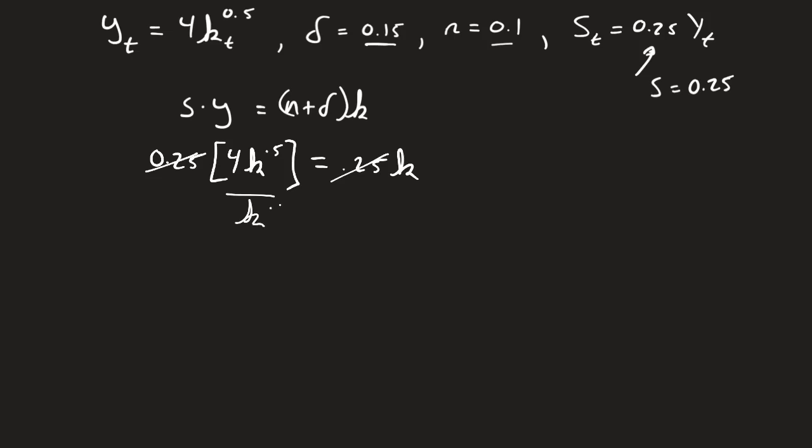And then I'm going to divide both sides by k to the 0.5. To cancel that out, I'm going to get 4 on the left-hand side of this equation equal to k divided by k to the 0.5. Remember, we just have to subtract the exponents here, so that's going to be left with k to the 0.5.